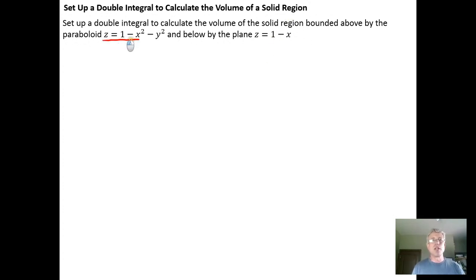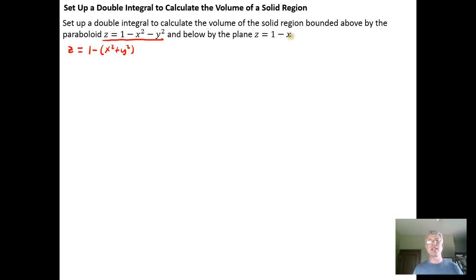Two things to notice right away about this. This is a paraboloid opening downwards — it's easy to see if we write it as z equals 1 minus (x squared plus y squared). So we have a paraboloid reflected downwards with a vertex on the z-axis of 1. The plane z equals 1 minus x is missing the y variable.